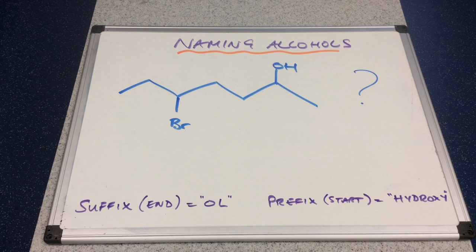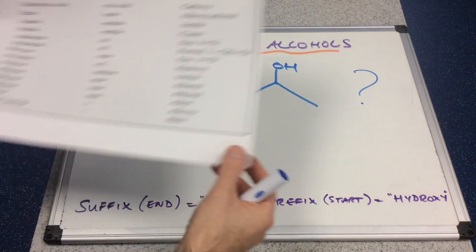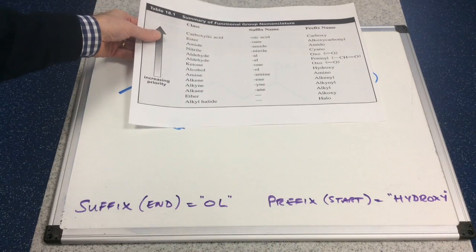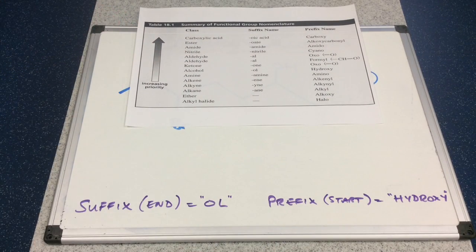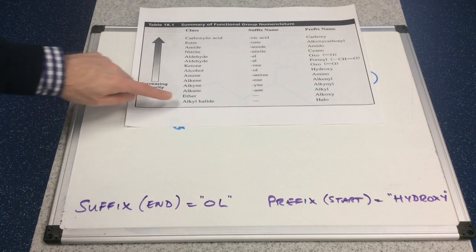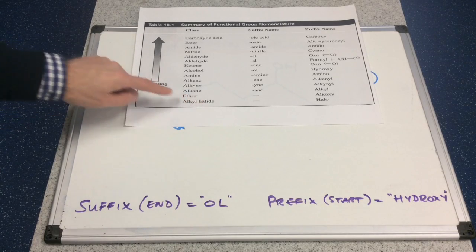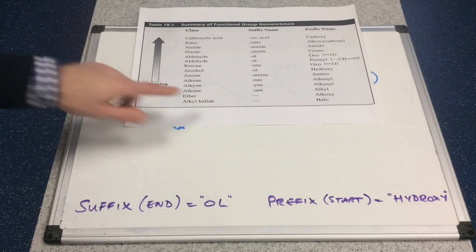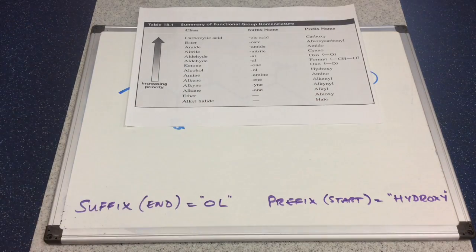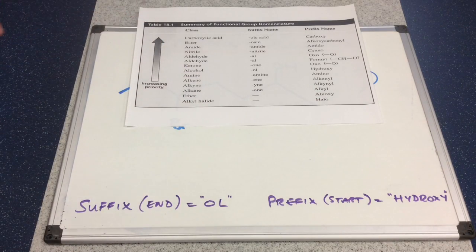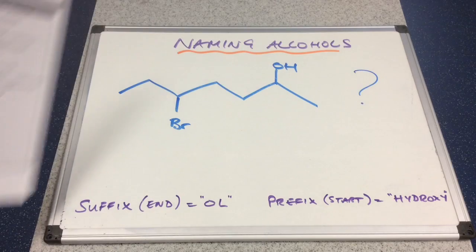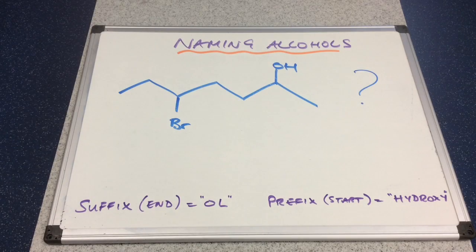We'll finish with this last one. What would we call this? I'll quickly show you the priority list again. The two functional groups in question are the halogen — which is at the very, very bottom of this list — and there's the alcohol, sort of in the middle. So what would we call this?